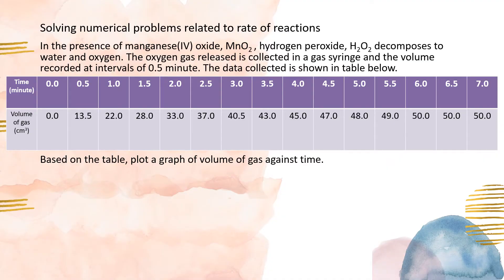Let's look at an example solving a numerical problem related to rate of reaction. In the presence of manganese dioxide, hydrogen peroxide decomposes to water and oxygen. The oxygen gas released is collected in a gas syringe and the volume is recorded at intervals of 0.5 minute. The data collected is shown in the table. Based on the table, plot a graph of volume of gas against time. The marks provided for this type of question is typically 3 or 4.